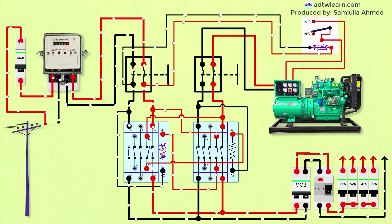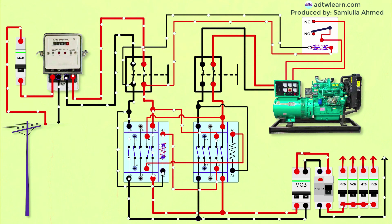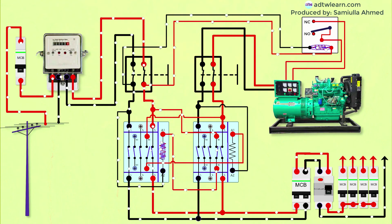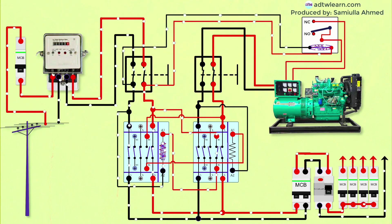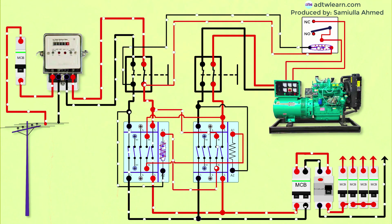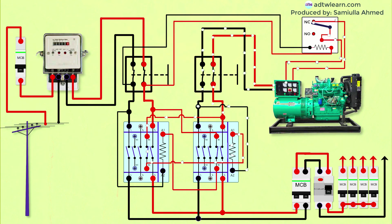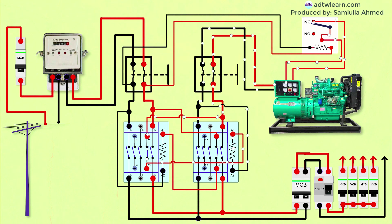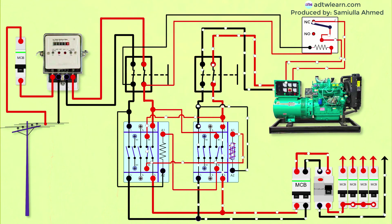When the supply from the electric pole is off, this is how the current from the electric generator will flow to the distribution board. In this case, the relay coil de-energizes and starts the generator. The supply from the generator will pass to the coil of the second contactor through the normally closed contact of the first contactor. This will energize the second contactor and close the contacts, thus the supply from the generator will pass to the distribution board.